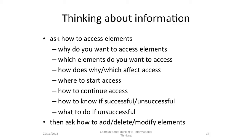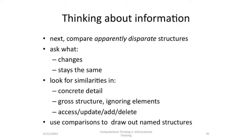Then ask about how we access the elements. You've got to know why you want to access the elements and which elements you want to access. How do the things you want to access affect how you access them? Think about where do you start trying to access and how do you continue access. How do you know if you've been successful? How do you know if you've failed? What do you do if you fail? And if you know how to access the elements, then you can start to ask about how you add or delete or modify the elements. Then compare apparently disparate structures and ask what changes and what stays the same. Look for similarities in the concrete detail, in the growth structure if you ignore the things that they're organising, and in how you access and update and add and delete elements. Then finally start using these comparisons to draw out the named information structures.